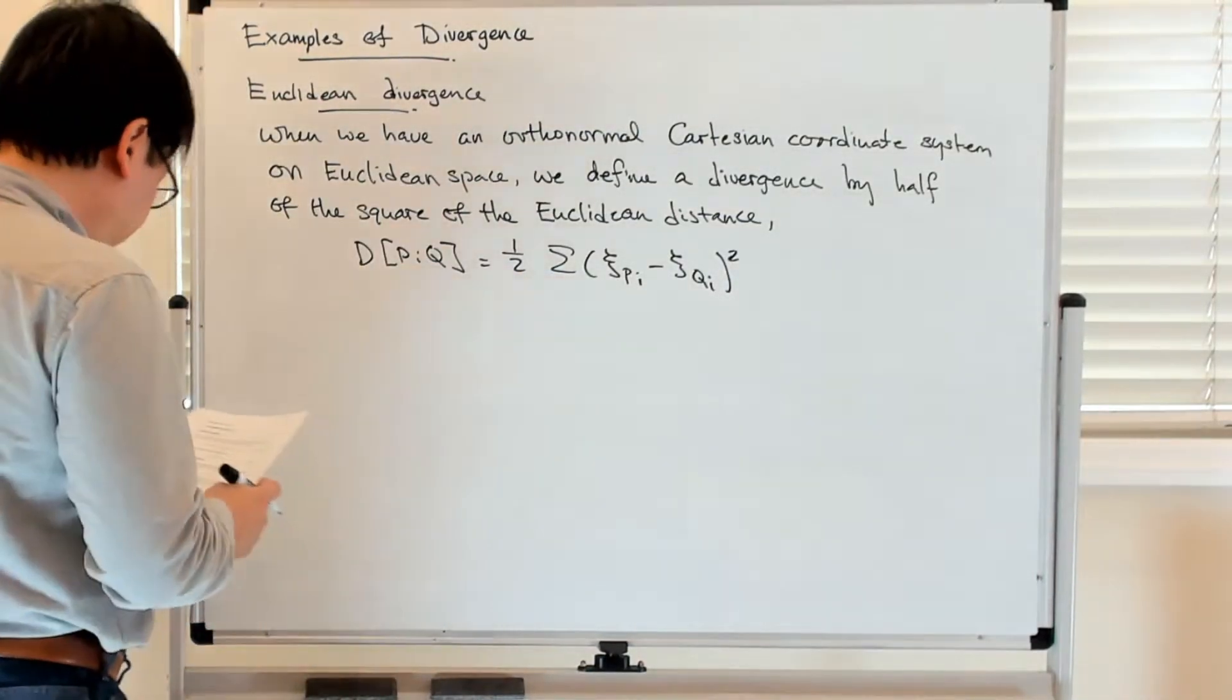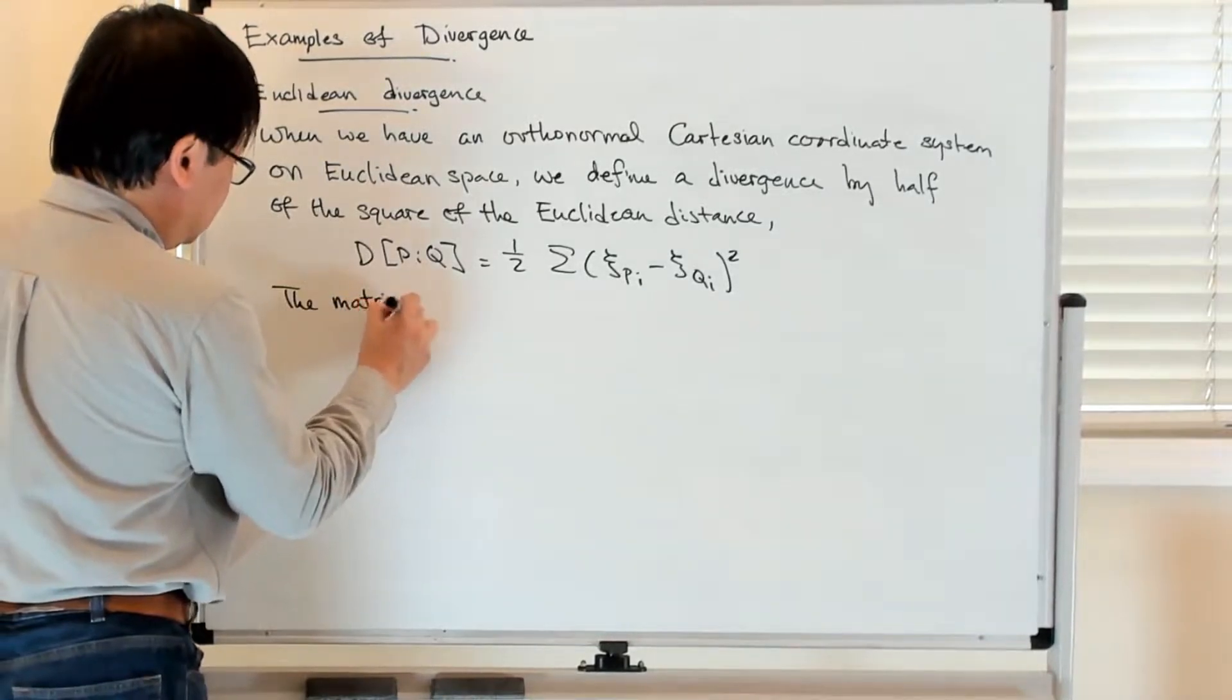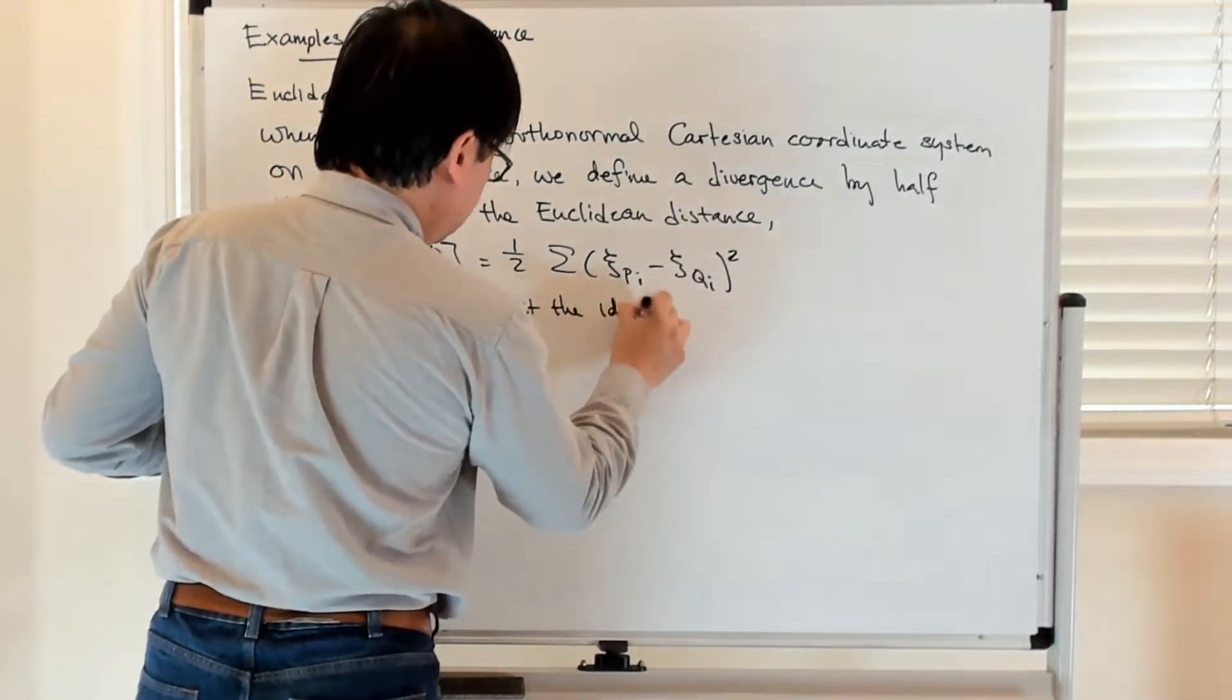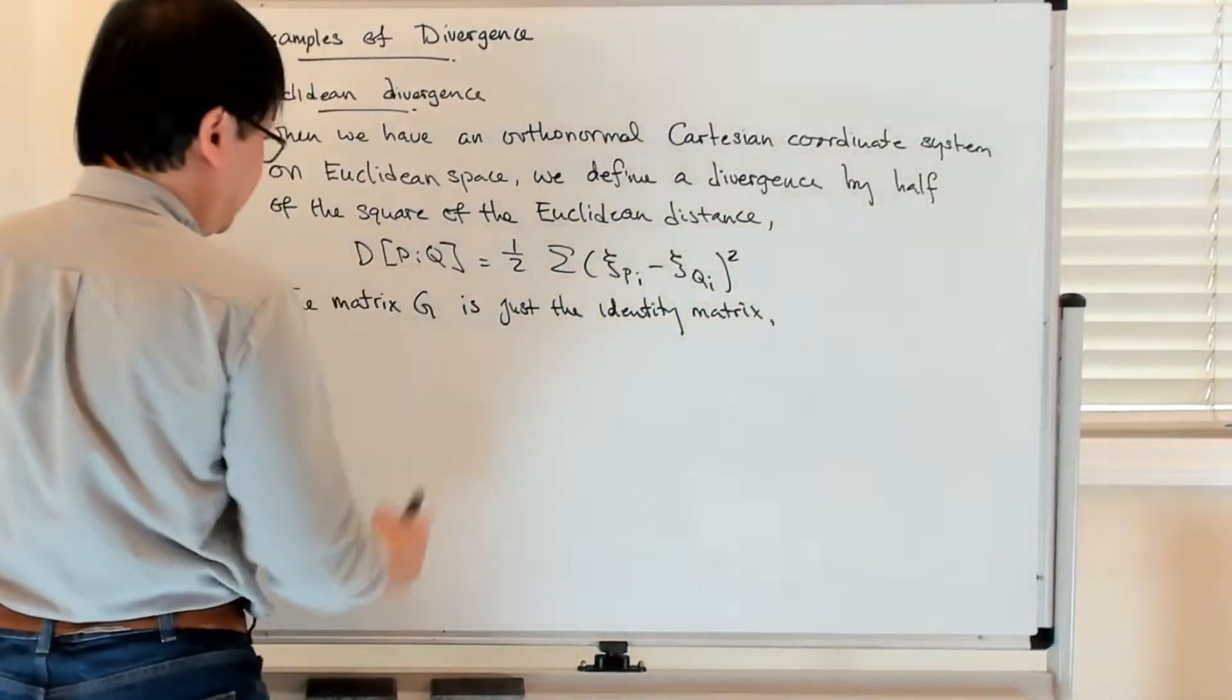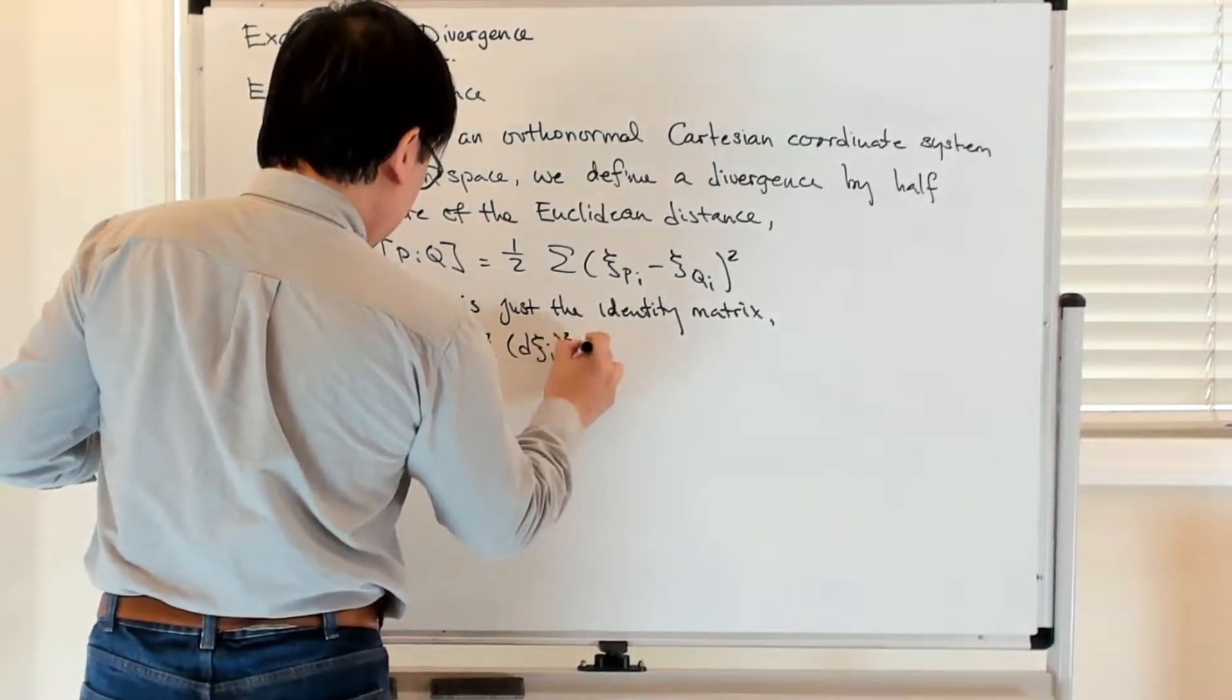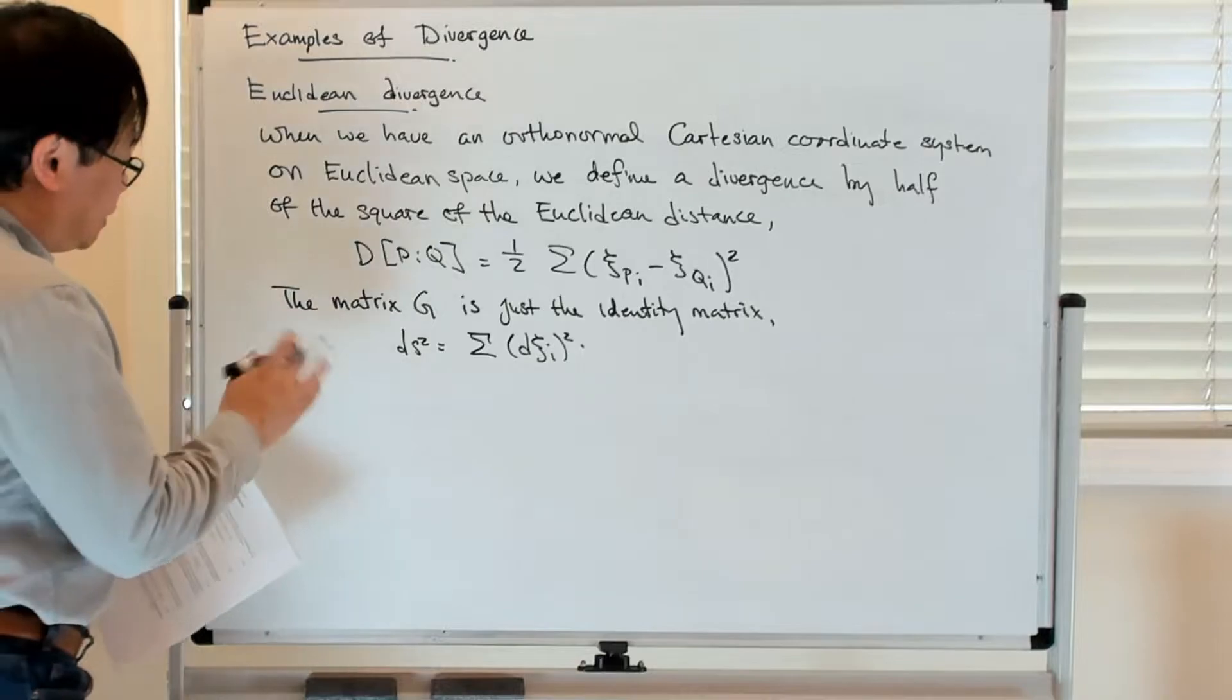The matrix G here is just the identity matrix, so the square distance is just the sum of the C_i squared. That's all fairly straightforward, not very exciting. So let's look at a more interesting example, the Kullback-Leibler divergence.